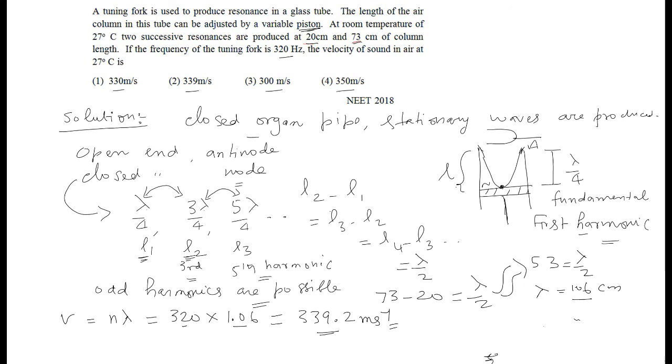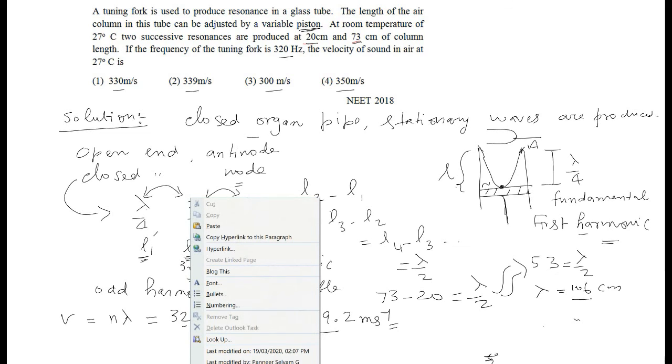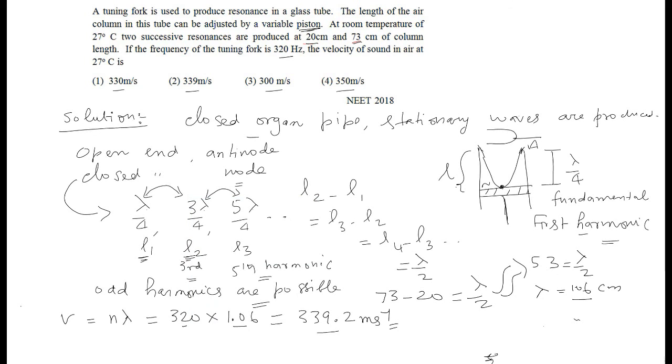It is there in option 2. So, 339.2 meter per second. Correct option is this. Have you understood this? Thank you.